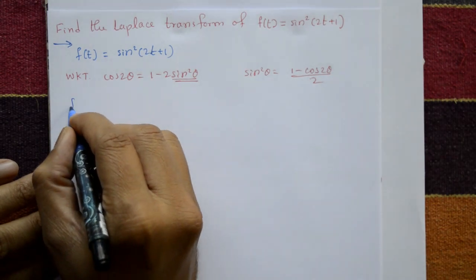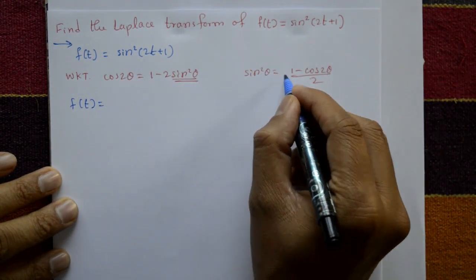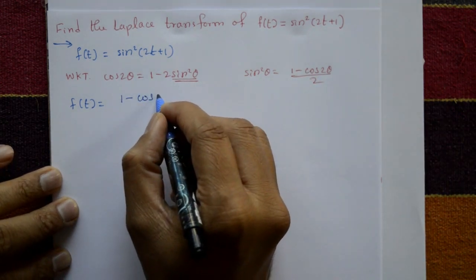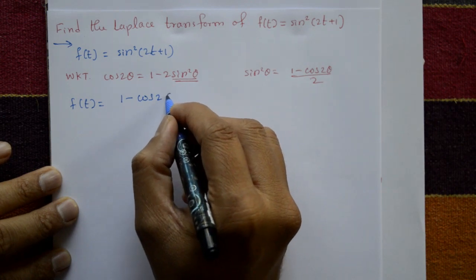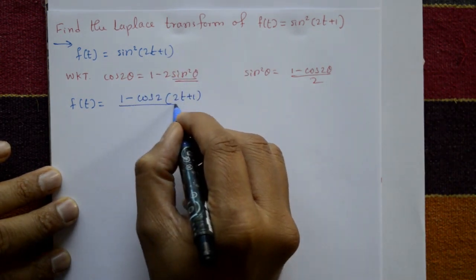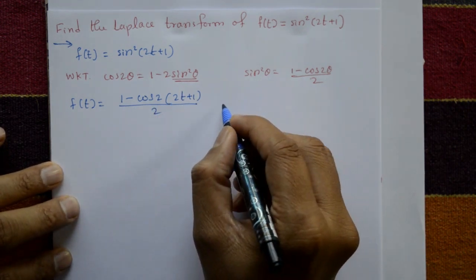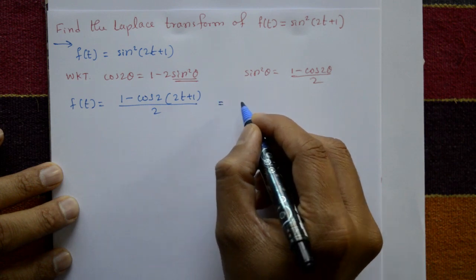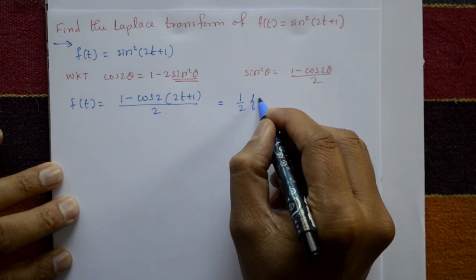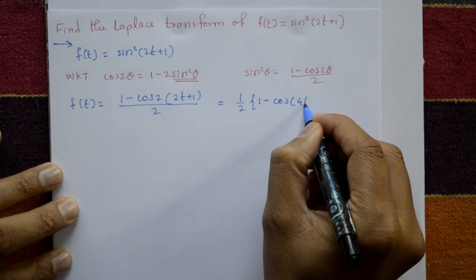Here θ means 2t, so sin²(2t) = (1 - cos(2·2t)) / 2 = (1 - cos(4t + 2)) / 2. Taking 1/2 outside: f(t) = (1/2)(1 - cos(4t + 2)).